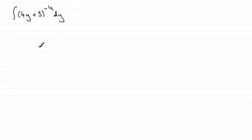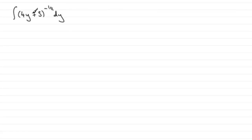We're asked to integrate 4y plus 3 to the power minus one half with respect to y. There are two ways of doing this: we could do it by recognition, or failing that, by substitution. I'll show you both methods. We have a linear function here raised to a power, so we can do it by recognition.